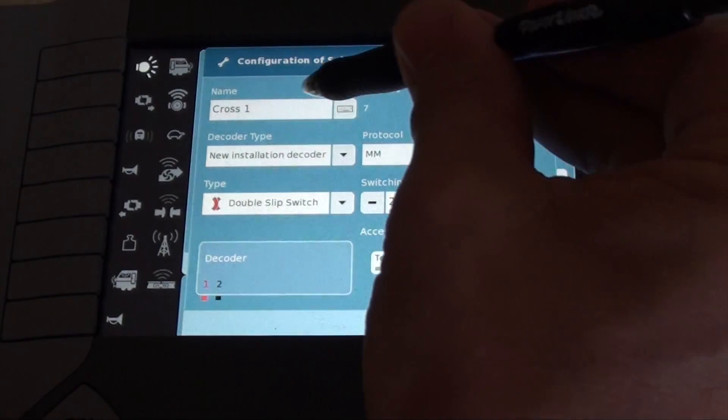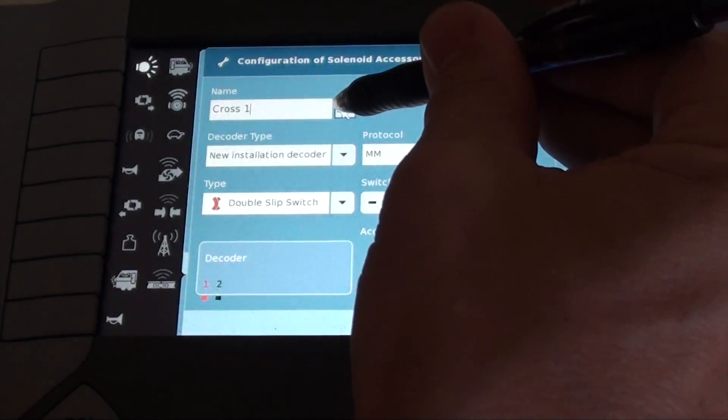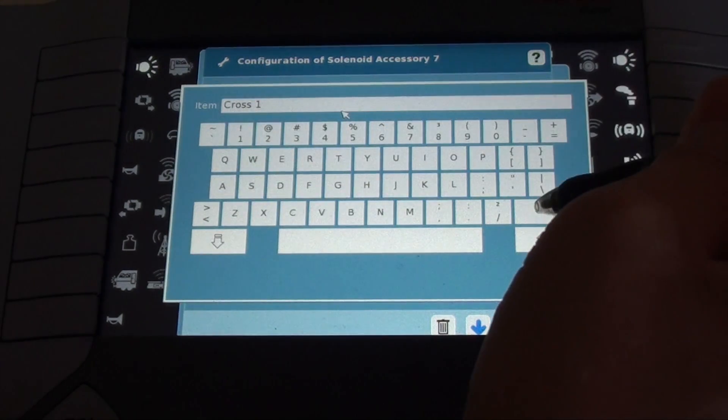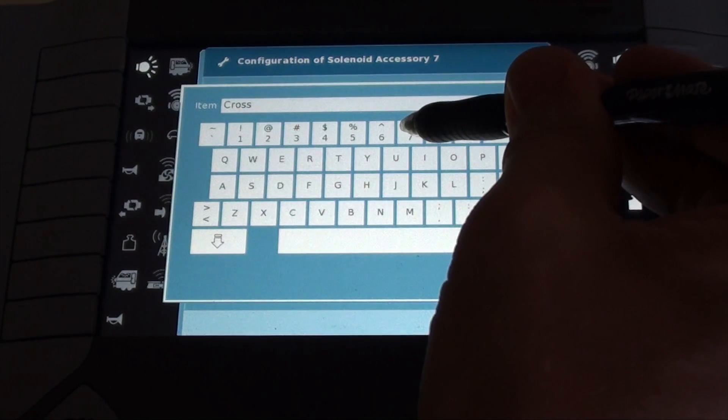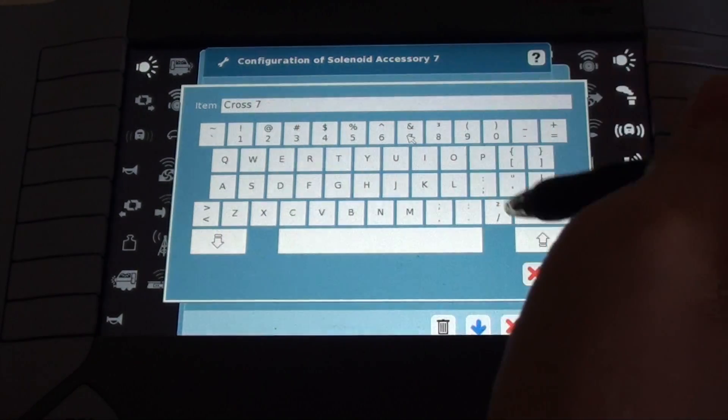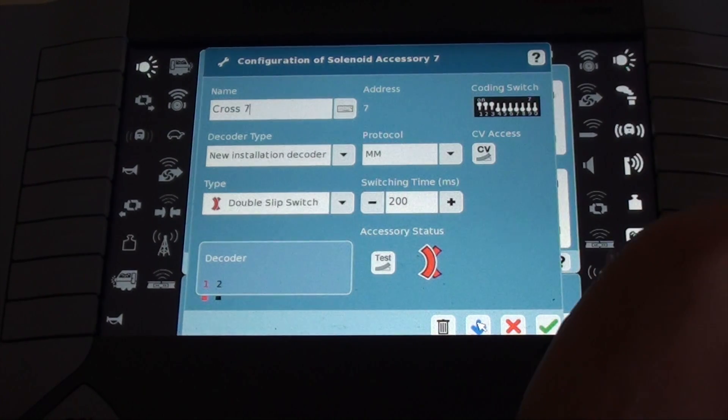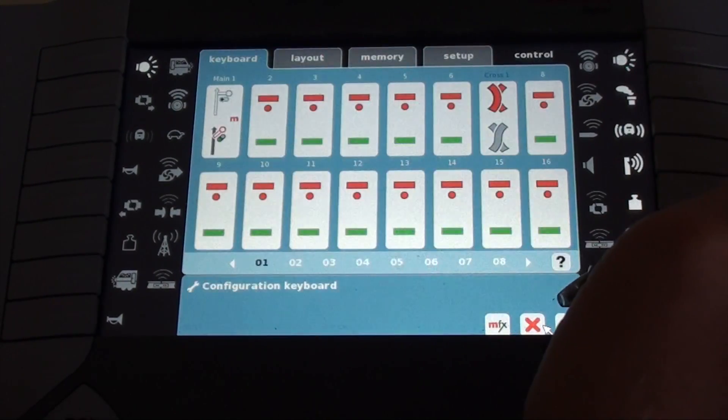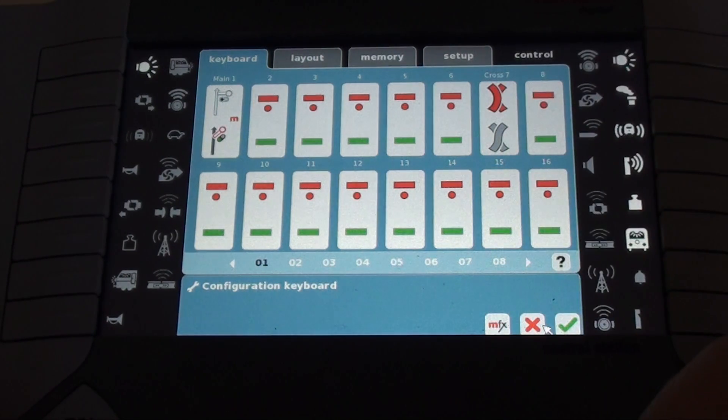Now if I want to change something on cross one, I can do that right here. Back to the configuration screen. And I could for example rename it to cross seven. If I like it, I hit the check mark. I hit the blue upload button. And we're set. Hit the check mark and get out of the configuration screen. You see it changed to cross seven.